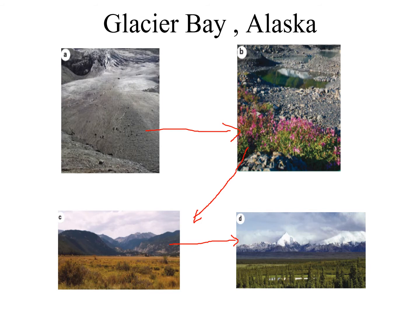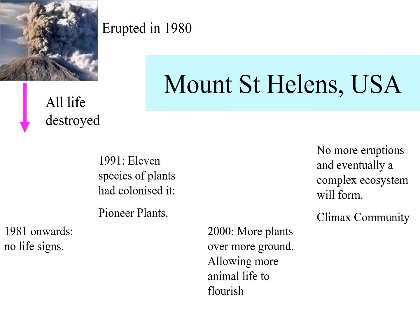The climax community — the most biodiverse state possible — depends on the area. In the UK, with plenty of water, mild temperatures, and relatively calm seasons, the climax community will be large trees, as the soils can develop fully. In an Arctic area like Alaska Bay, with frozen water, extremely low temperatures, and massive seasonal fluctuations, the climax community might only be shrubs or small trees due to the extreme conditions.